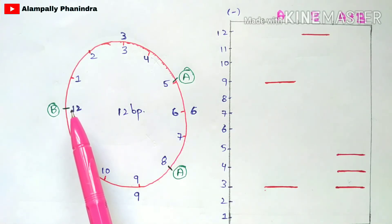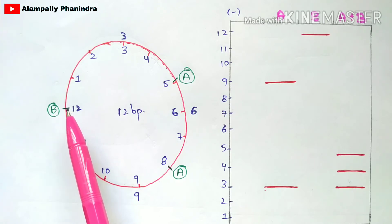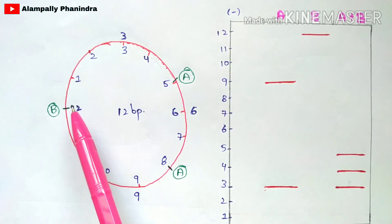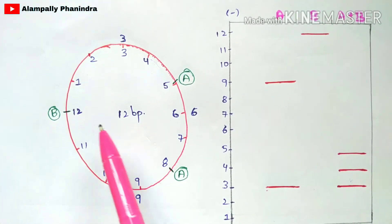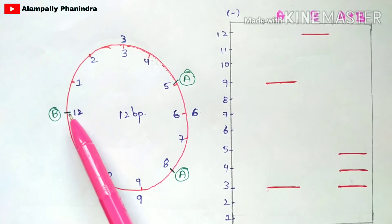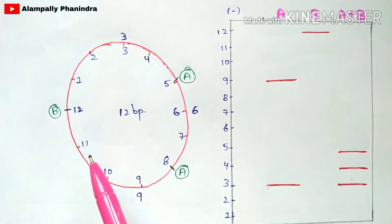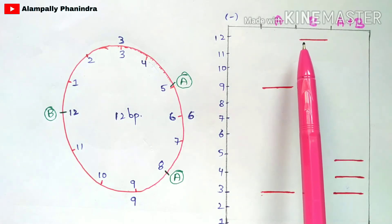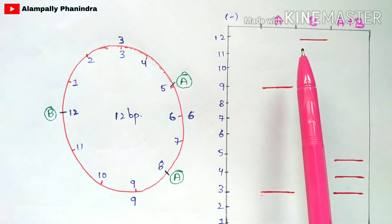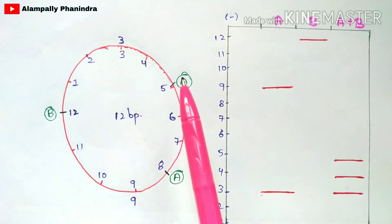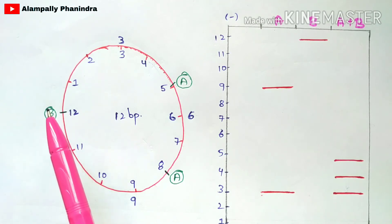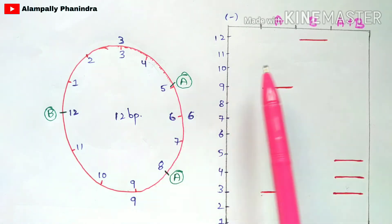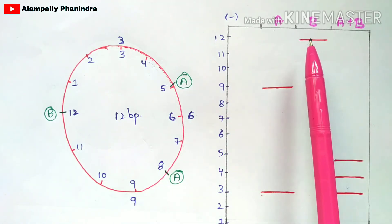Now for restriction enzyme B: if we add it at the 12th base pair site, only one restriction enzyme is added at one restriction site, so only one DNA fragment will be obtained — the whole DNA fragment. This fragment consists of 12 base pairs. At the 12th base pair point, this fragment will get stopped and will not migrate towards the positive electrode because it is large in size, consisting of 12 base pairs.